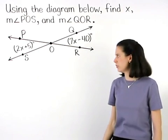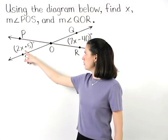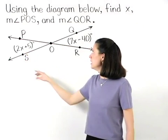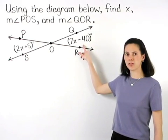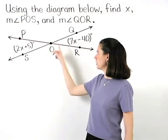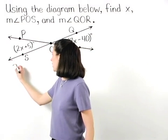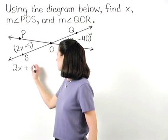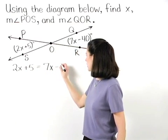Since our diagram tells us that the measure of angle POS is 2x plus 5, and the measure of angle QOR is 7x minus 40, and we know that these angle measures are equal, we can set up the equation 2x plus 5 equals 7x minus 40.